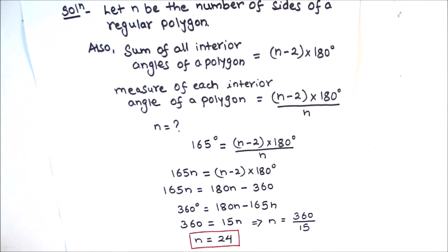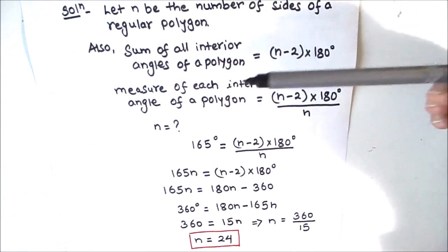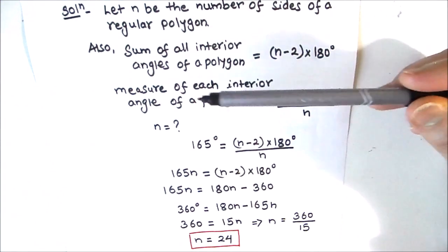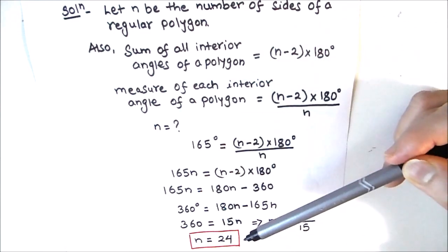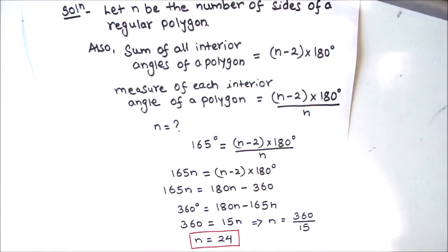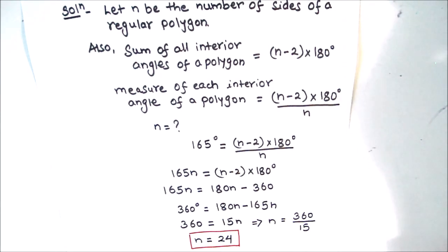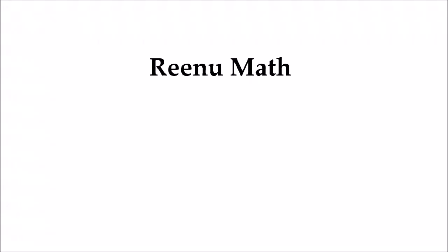By making use of the formula for finding the measure of each interior angle of a polygon, we can find the number of sides in a regular polygon when each interior angle is given. I hope this video is helpful. If you like the video, please hit the like button and subscribe to my channel for more math videos. Thanks for watching.